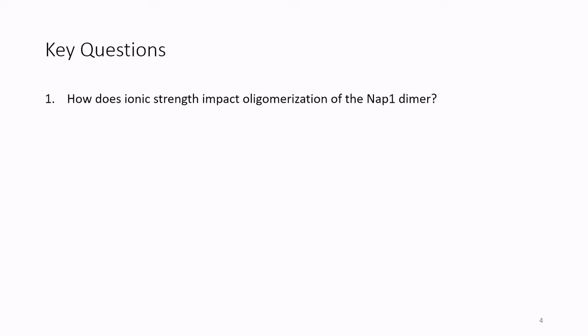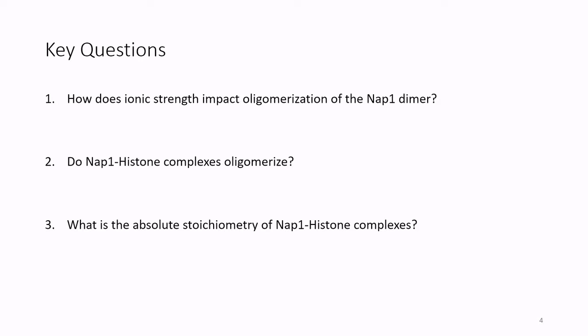With this newly identified NAP1 ortholog in hand, we set out to answer the following key questions: First, how does ionic strength impact oligomerization of the NAP1 dimer? Second, do NAP1-histone complexes oligomerize? And third, what is the absolute stoichiometry of NAP1-histone complexes? By comparing and contrasting yeast NAP1 to WormNAP1, we'll be able to determine the role of the disordered N and C-terminal tails in each of these events. To do this, we used an approach called SecMALS.